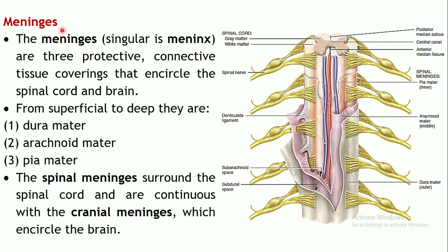Coming to the second type of protective layer — the meninges. Singularly it is known as meninx. There are three protective layers mainly comprised of connective tissues, known collectively as meninges. These encircle the spinal cord as well as the brain — the same three layers in continuation protect the entire CNS. The ones surrounding the spinal cord are known as spinal meninges, and those surrounding the brain are known as cranial meninges, both being in continuation and comprising the same three layers.